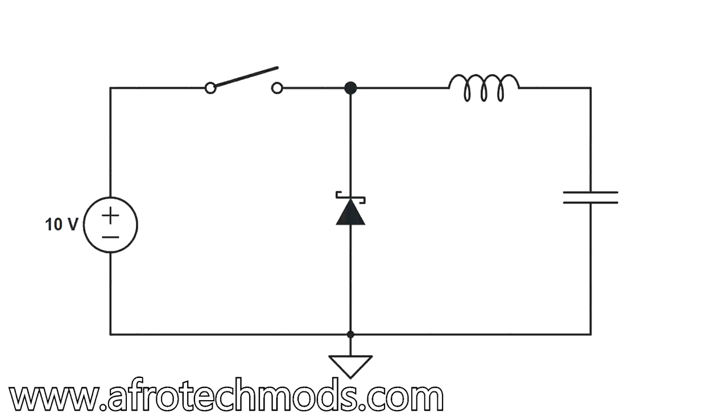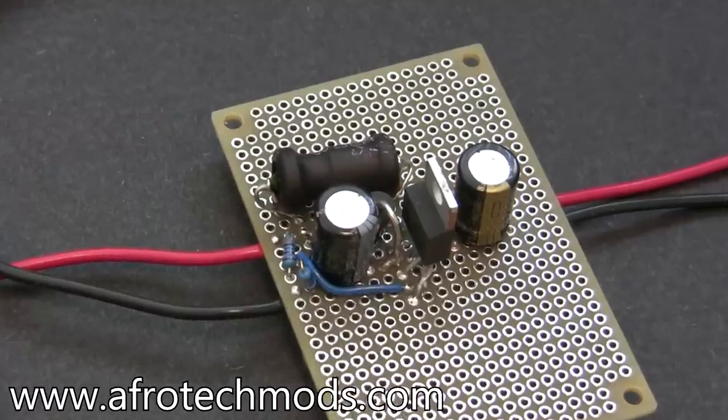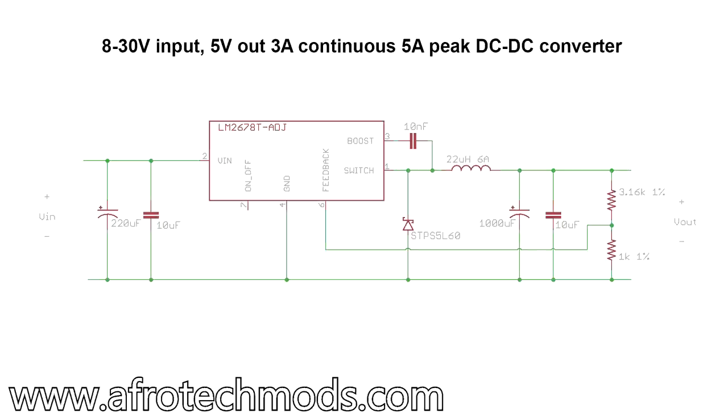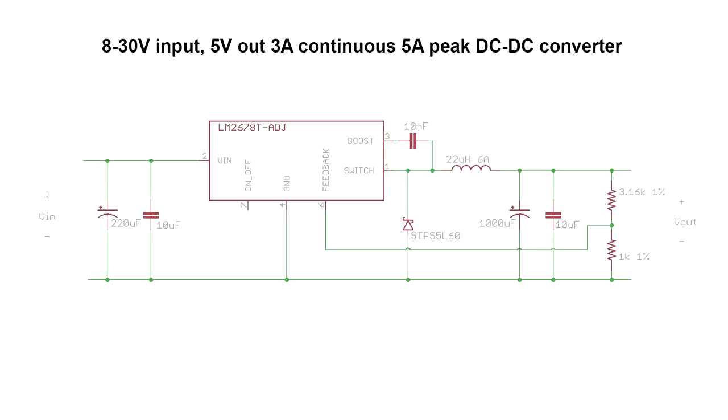Today I'm going to teach you about buck converters and show you how to make a switch mode power supply that can work with input voltages between 8 and 30 volts and steps the output down to 5 volts. It can supply 3 amps continuously and handle peak currents of up to 5 amps for several minutes.